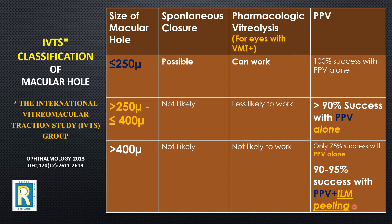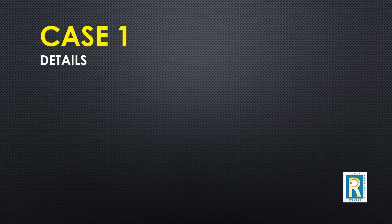For large holes, we must do an additional step of peeling the internal limiting membrane (ILM). The internal limiting membrane is the innermost layer of the retina — you can think of it as peeling the skin of the retina. This step is important to increase the chances of successfully closing a large macular hole.